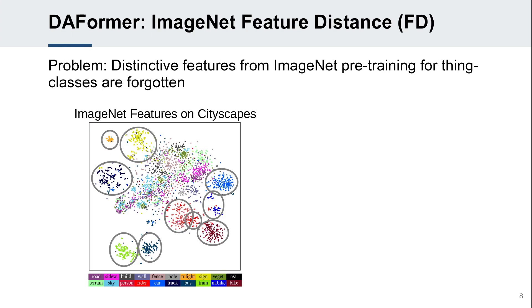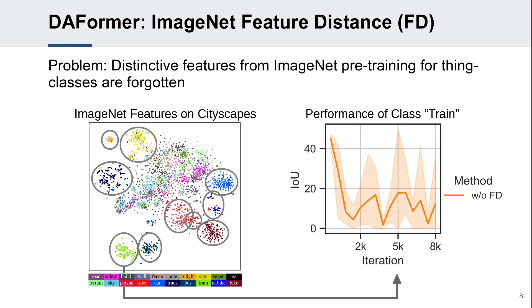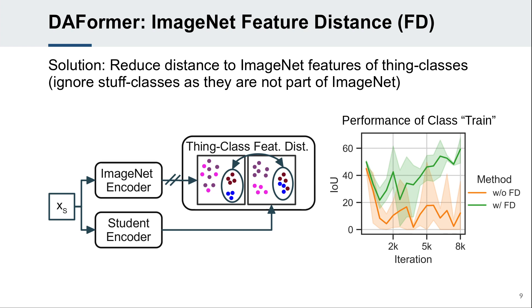Already after ImageNet classification pre-training, the features of the robust encoder can sufficiently distinguish thin classes that are part of ImageNet. However, during UDA, the network overfits to the source domain and difficult classes of the target domain are not distinguished anymore. Therefore, we propose a thin class ImageNet feature distance to regularize the source training. As ImageNet features were trained for thin classes, we restrict the feature distance to regions of the image that are labeled as a thin class. In that way, diverse and expressive features from pre-training are preserved and the network can better adapt to thin classes.